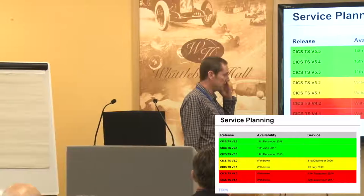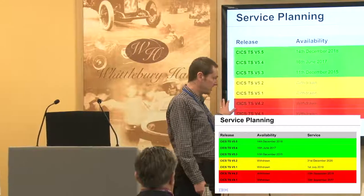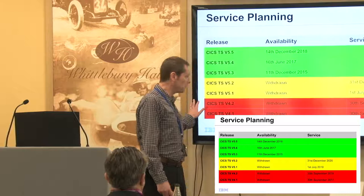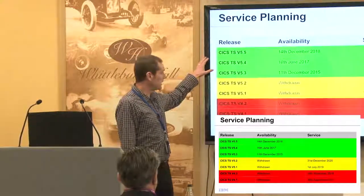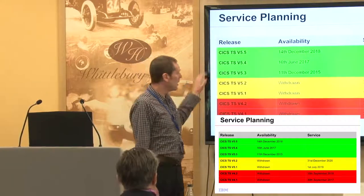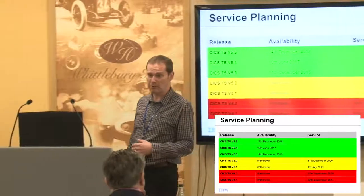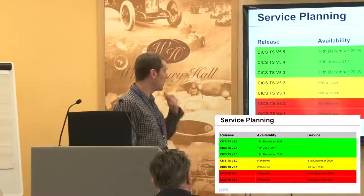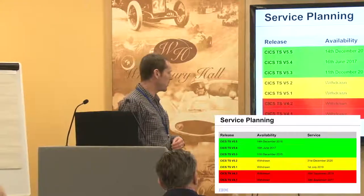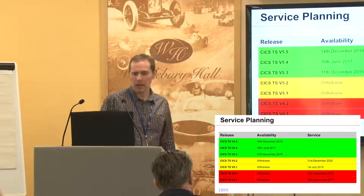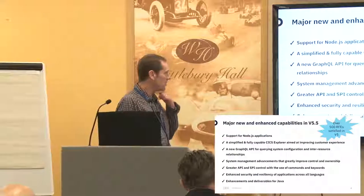Where are we in terms of service? Version 4.2 reached end of life a couple of months ago. 5.5 will become available on the 14th of December. A key date to look out for is for those of you on version 5.1 or 5.2, particularly 5.1 — end of service is fast approaching, that's seven months away. So, what's new in 5.5?